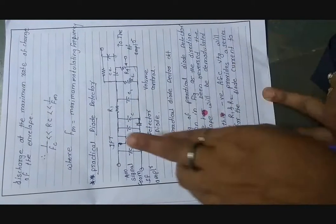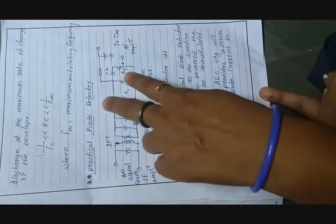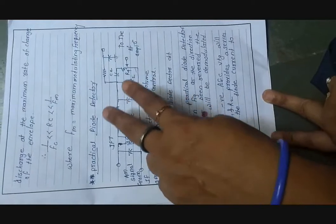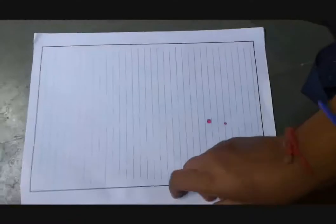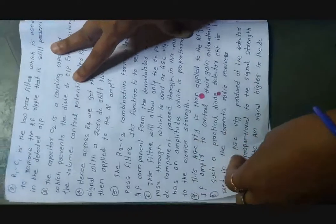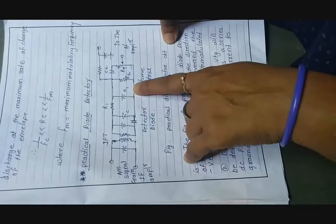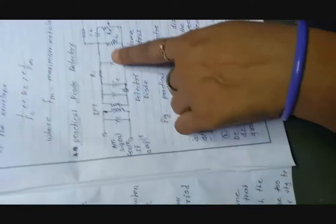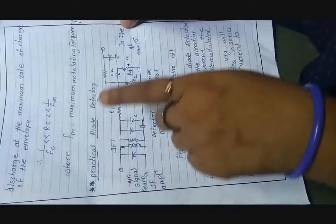Due to this, the negative AGC — Automatic Gain Control — voltage is developed using resistors R1 and R2. These two resistors are used for controlling or converting the automatic gain control. They provide a DC series path for the diode current to ground. R1 and C1 form a low pass filter, which is used to remove the ripple still present in the detected output. The capacitor is connected in parallel, making it a low pass filter that filters out unwanted DC components.